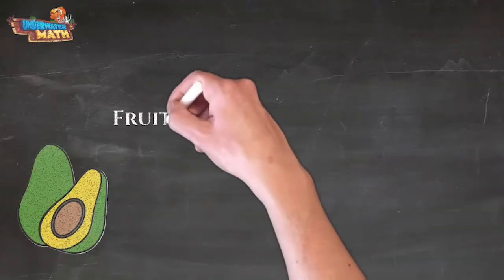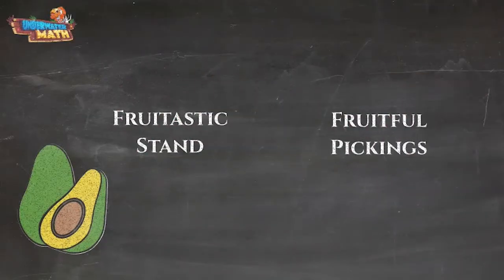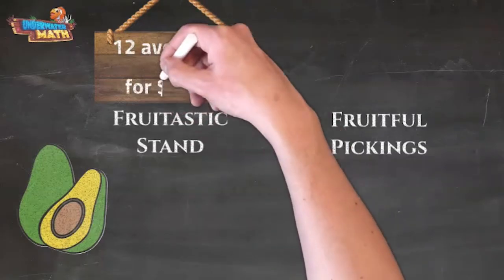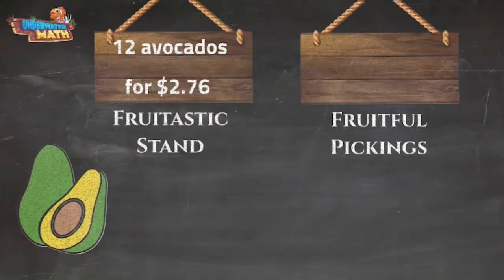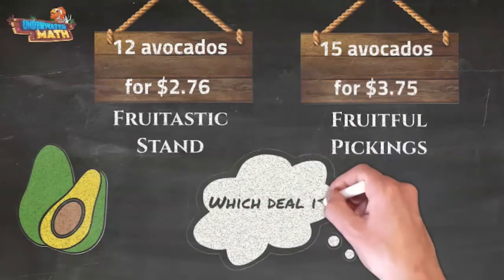Let's look at one more. Layla was comparing prices for avocados at two different fruit stands. She can get 12 avocados for $2.76 at Fruitastic Stand, and 15 avocados for $3.75 at Fruitful Pickings. Help Layla figure out which deal is better.